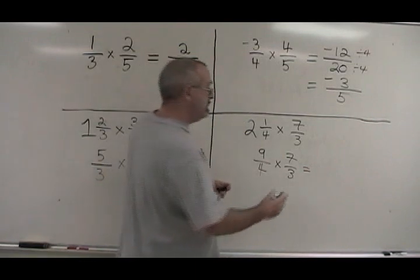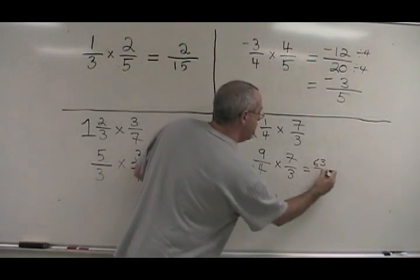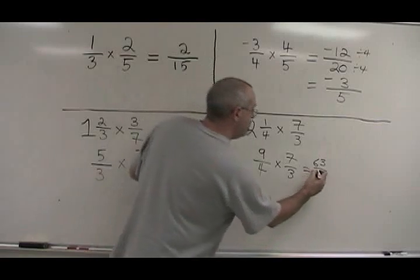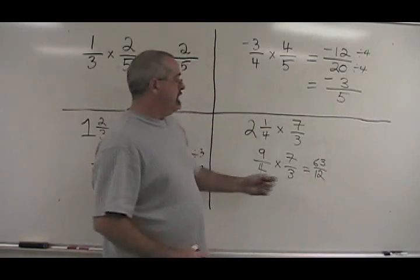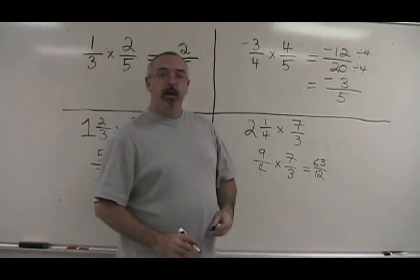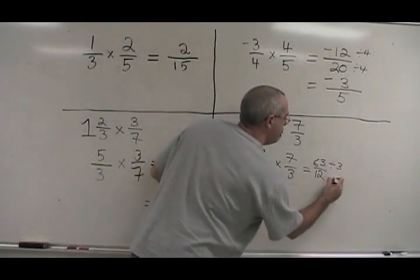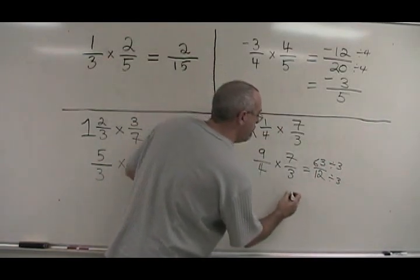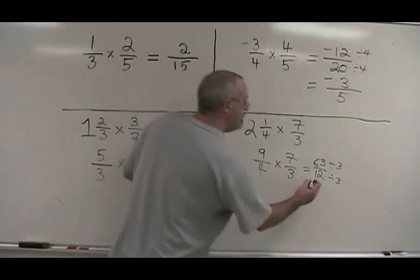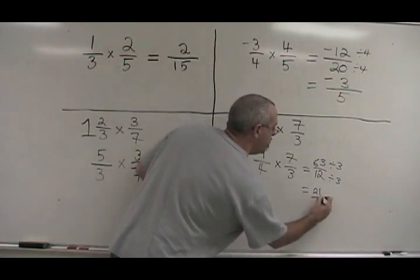9 times 7 is 63. 4 times 3 is 12. 63 and 12 have a common factor of 3. We divide them both by 3, and we get 21 over 4.